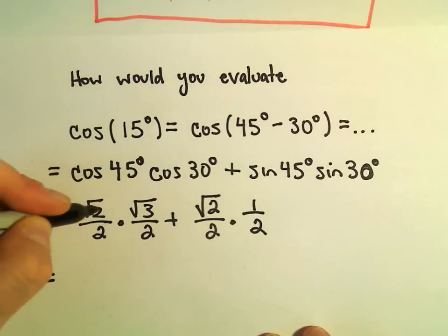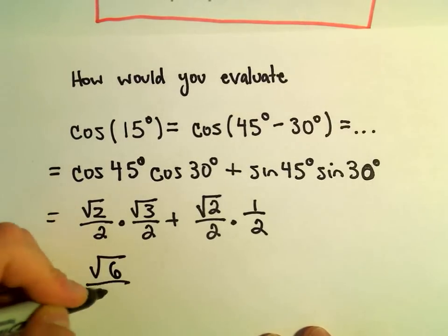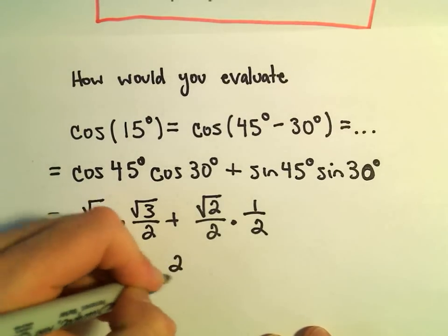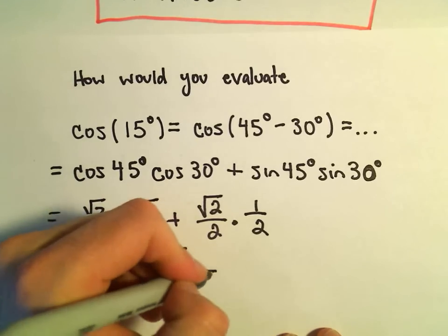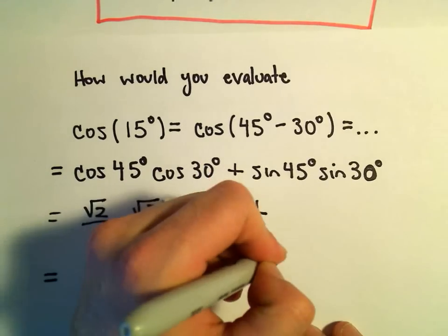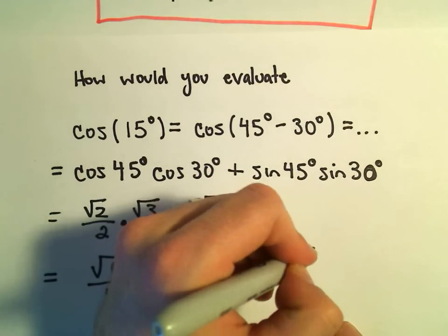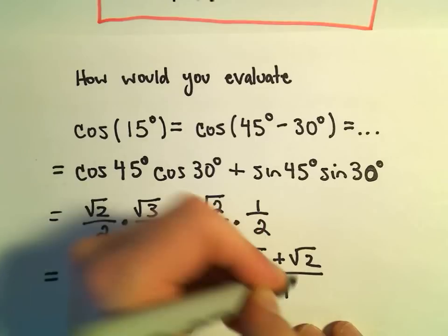So okay, it looks like we're getting square root of 6 over 4 plus the square root of 2 over 4. And then again, we can write this as a single fraction, the square root of 6 plus the square root of 2 over 4.